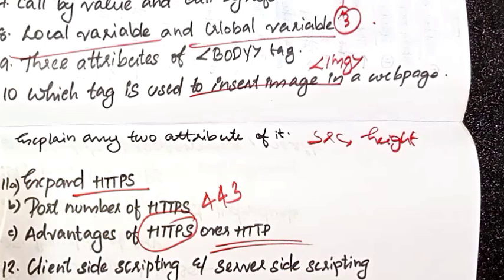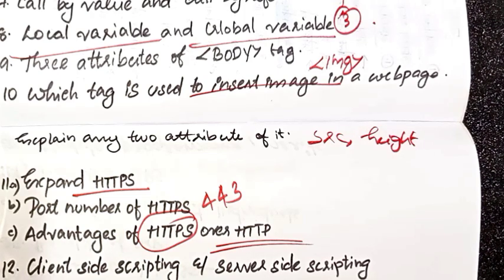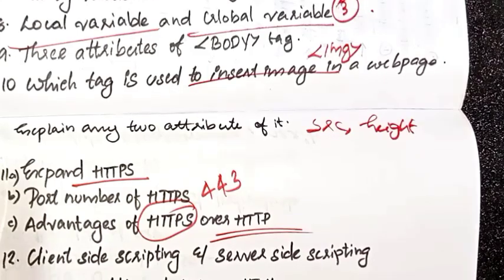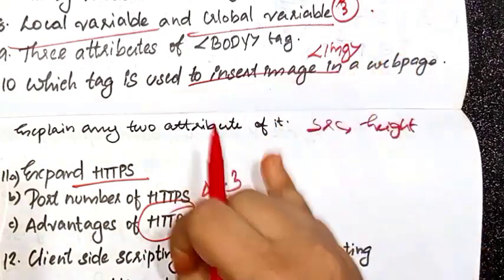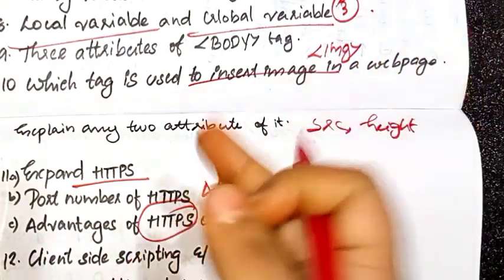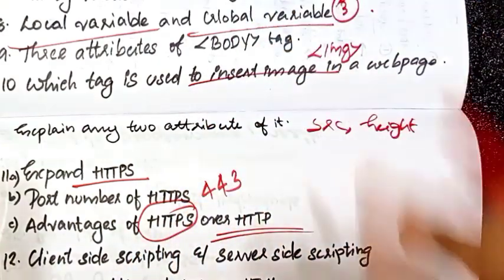The next question is client-side scripting and server-side scripting. The next question is about lists in HTML. The list types are: ordered list, unordered list, and definition list. The list has attributes.